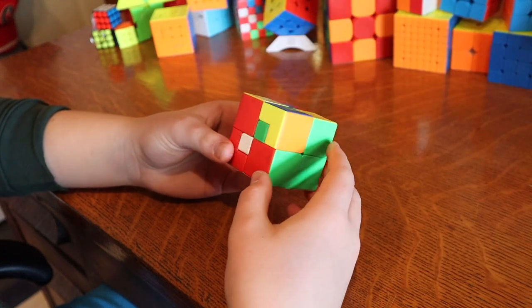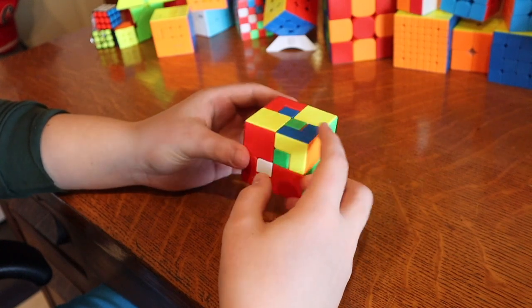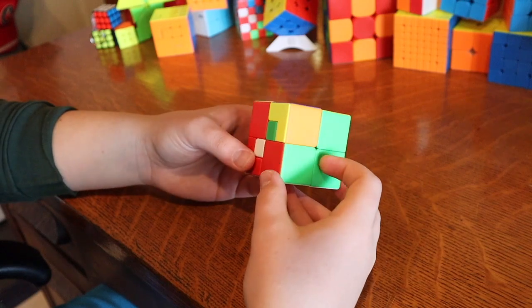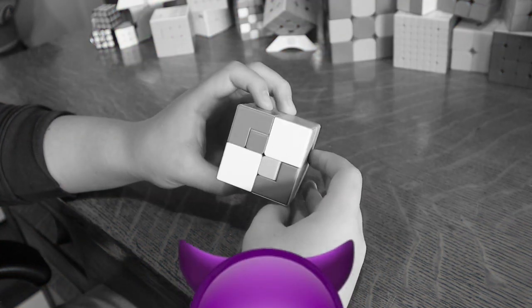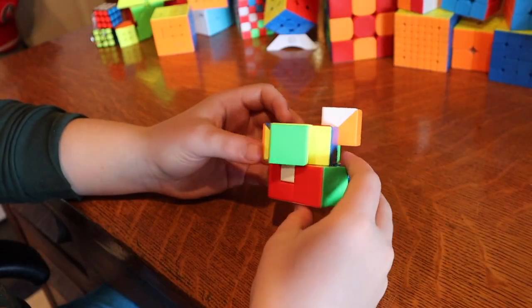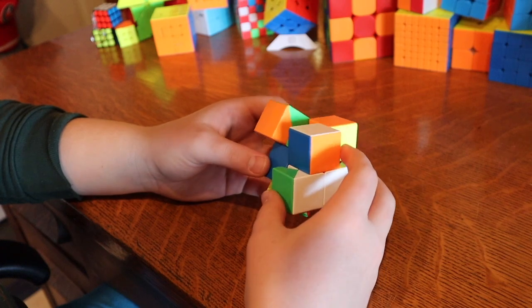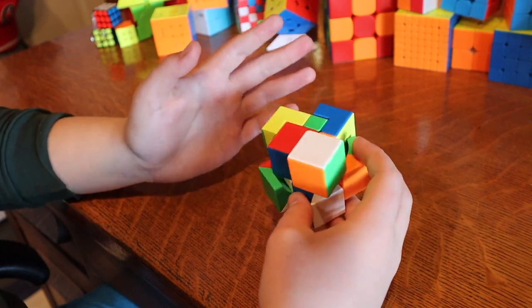So I think the next step is to get the corners of the 2x2 part in the right spot and I just have these two that aren't solved. So this step should be pretty easy but I'm not sure. Okay, so I was trying to do something and I just ended up mixing the whole thing up again.